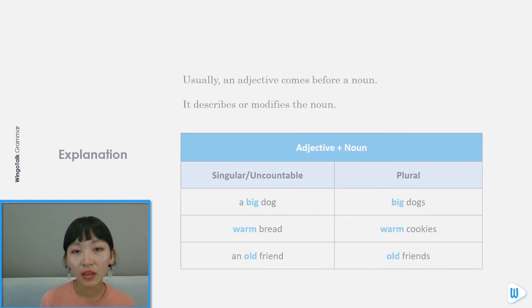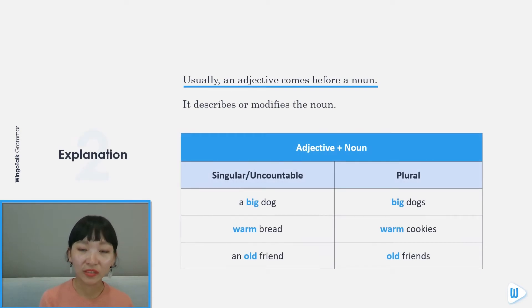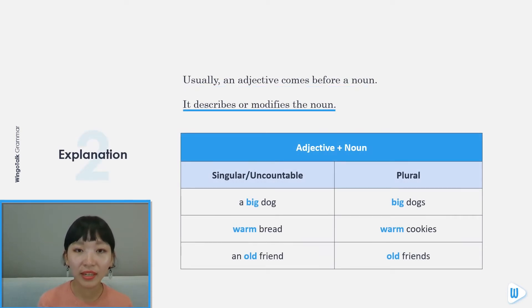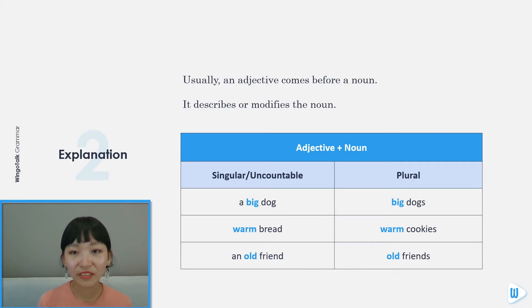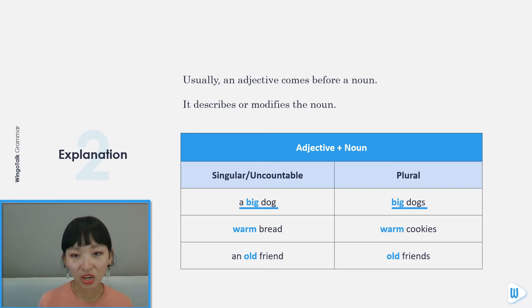Usually, an adjective comes before a noun. It describes or modifies the noun. Adjective plus noun. For example, singular: a big dog. Plural: big dogs.